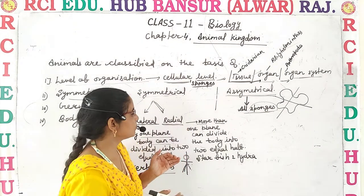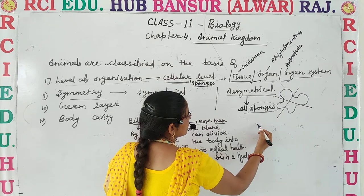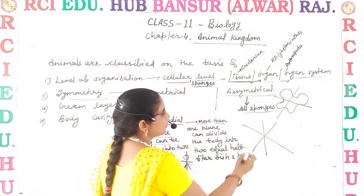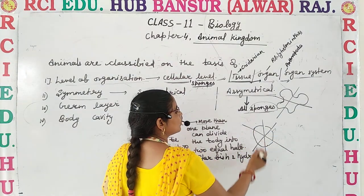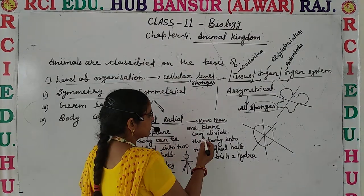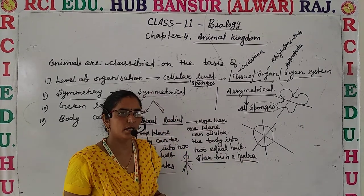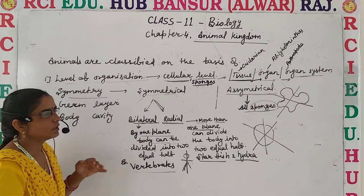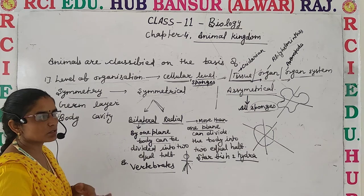In radial symmetry, organisms can be divided into two equal halves through one or more planes. If the body can be divided into two equal halves through one or more planes, that type of symmetry is known as radial symmetry. This type of symmetry is mainly present in starfish, hydra, and others. This is the second level of classification by which we can classify animals into various groups.